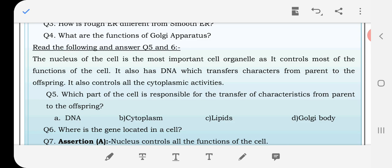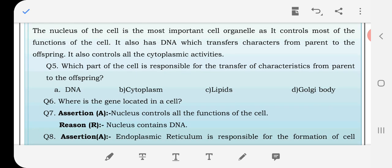Which part of the cell is responsible for the transfer of characteristics from parent to offspring? The answer is DNA. Where is the gene located in a cell? Genes are in the chromosomes and the chromosomes are in the nucleus.